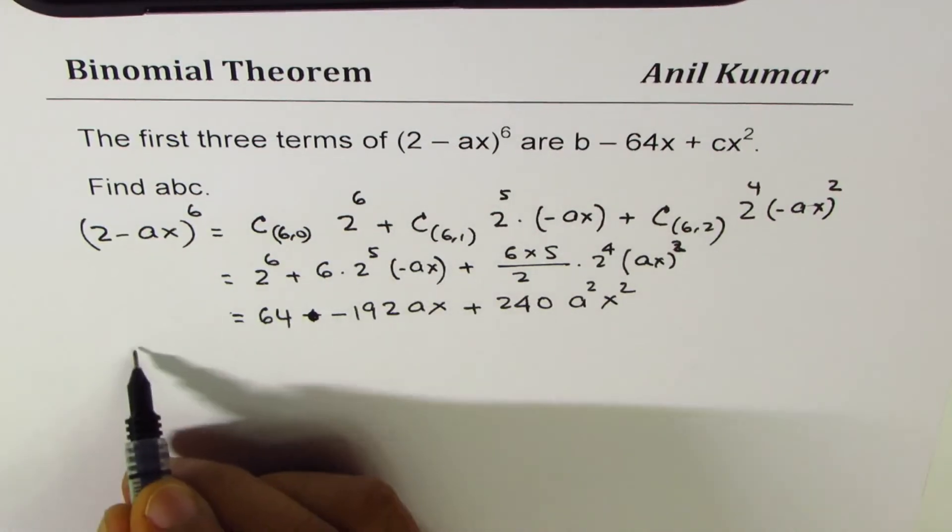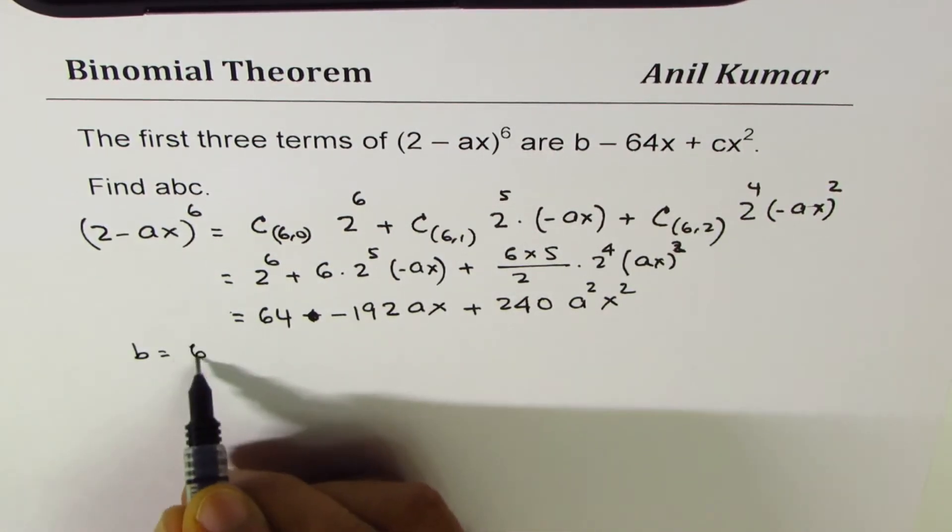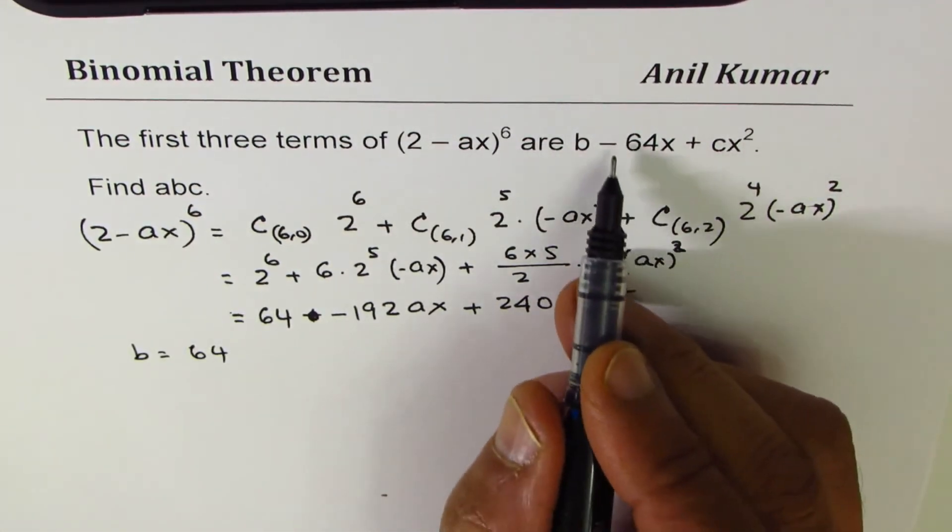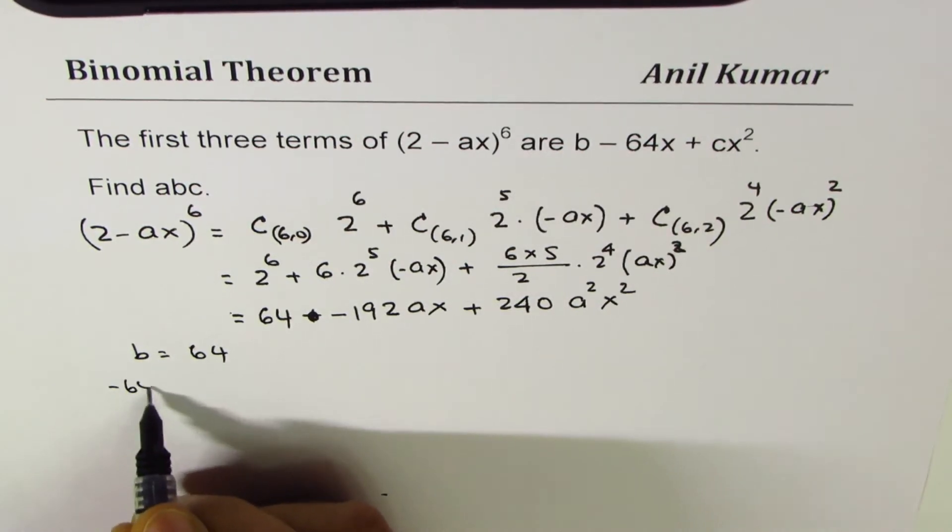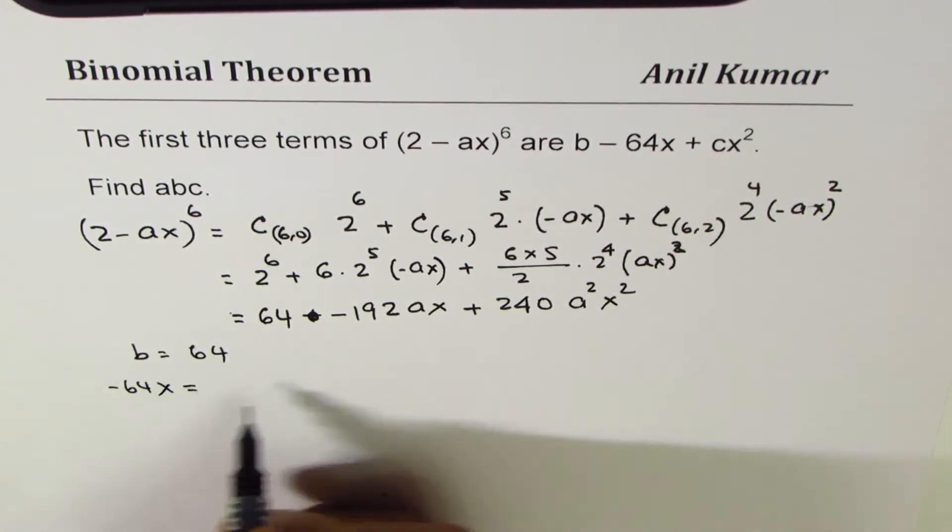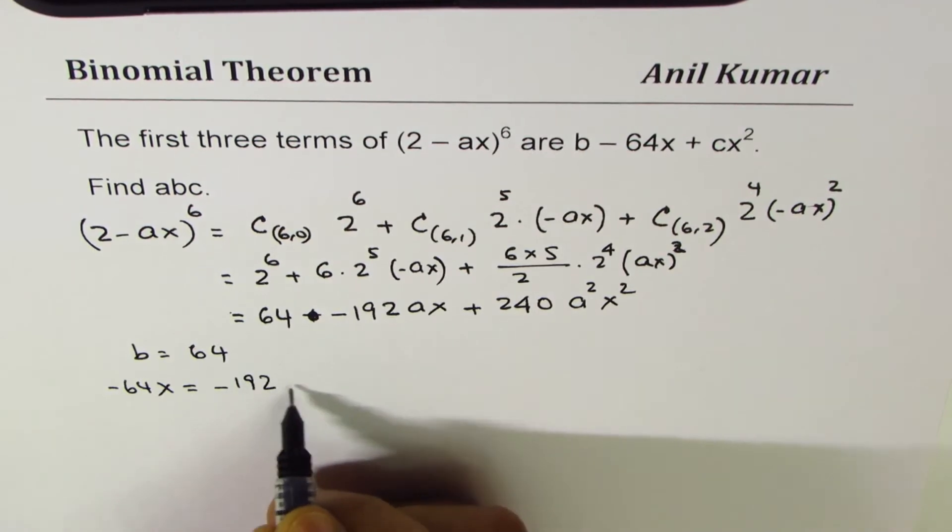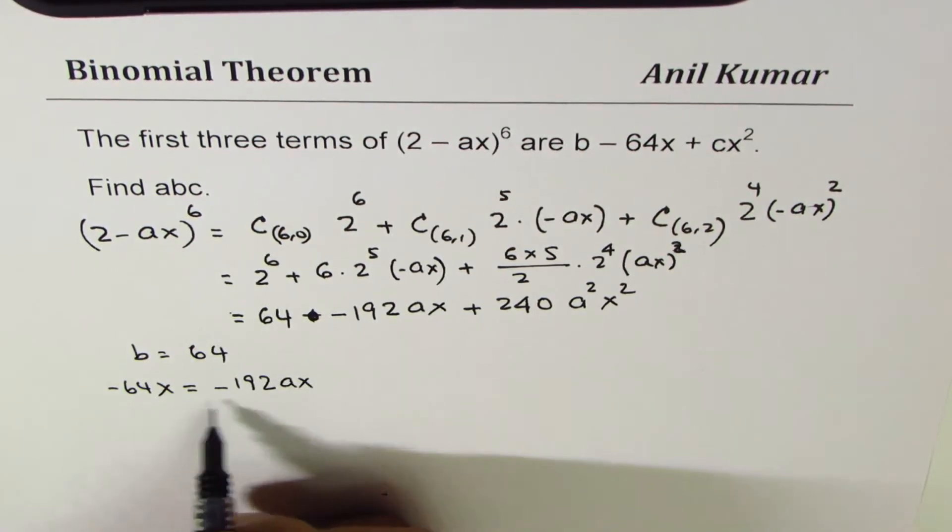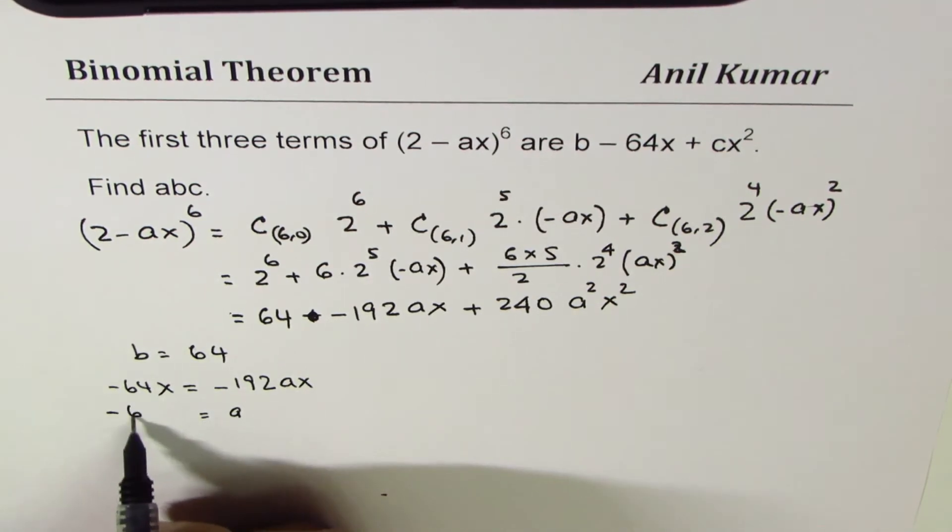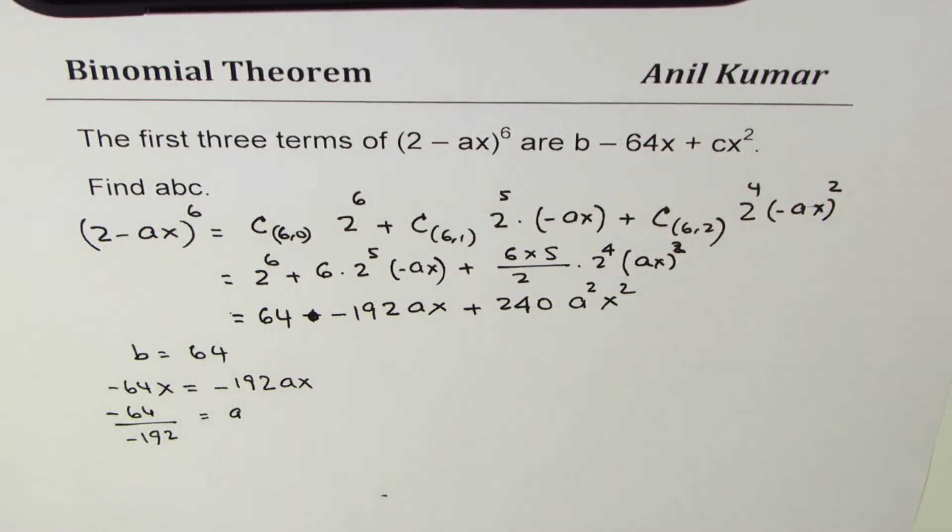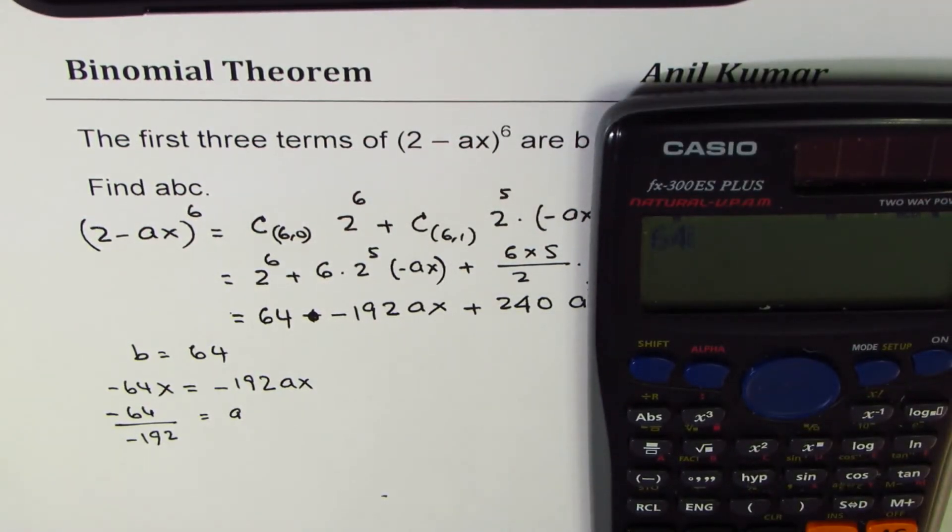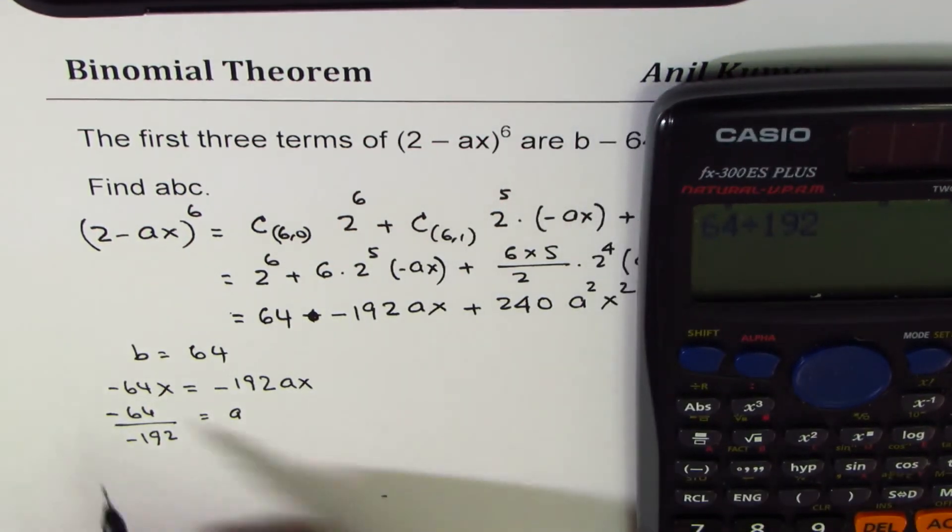Everything squared, perfect. So now we have three terms and we can compare one by one. So b = 64. -64x is the second term, that should be equals to -192ax. So that gives you the value of a. So a = 64 ÷ 192 = 1/3.